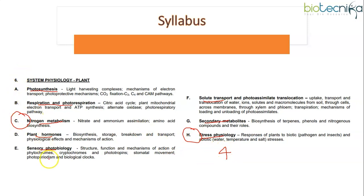But the remaining subunits — photosynthesis, respiration, plant hormones, sensory photobiology, solute transport, and secondary metabolites — every time you will get a question from all these subunits. Nitrogen metabolism and stress physiology are optional.